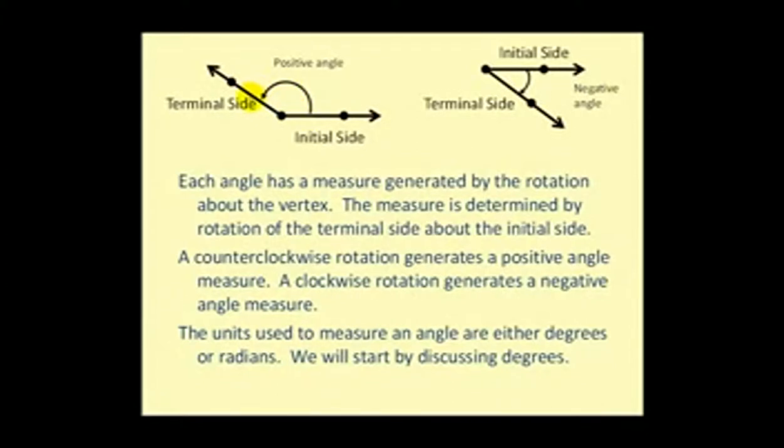And when the rotation is counterclockwise, it's a positive angle. If the rotation is clockwise, it's a negative angle. The units used to measure an angle are either degrees or radians. We will start by discussing degrees.